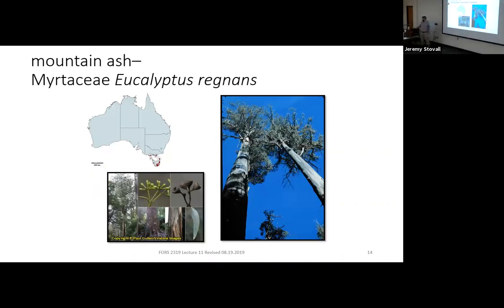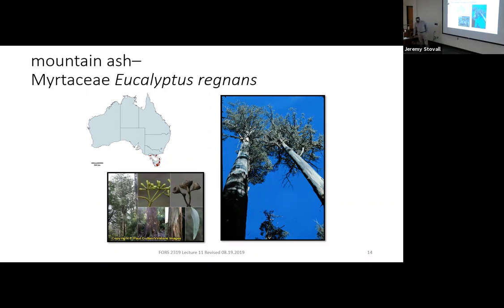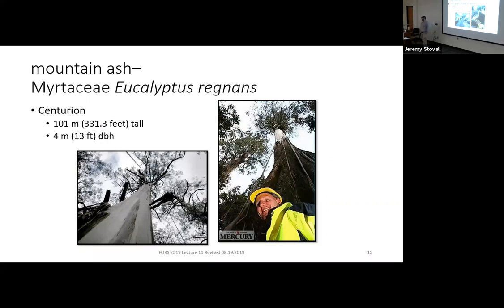First up is mountain ash, Myrtaceae Eucalyptus regnans. It's found on the island of Tasmania and in southeastern Australia. It has the gum nuts, bluish lanceolate leaves, and stringy bark. The specific epithet regnans means royalty — king or queen — and this is the world's tallest eucalyptus species. More than that, this is the world's tallest angiosperm. The tallest angiosperm on the planet is found in Australia: a Eucalyptus regnans called Centurion, 101 meters tall — 331.3 feet.